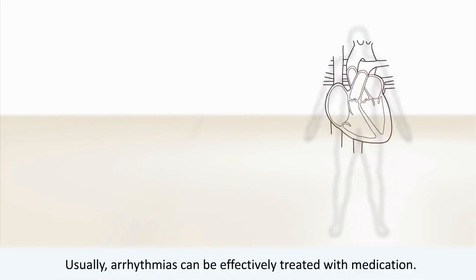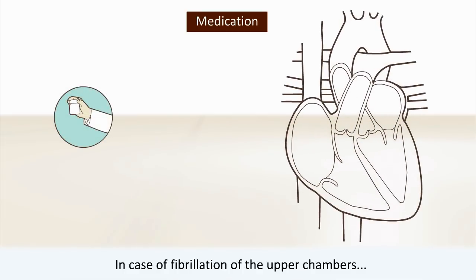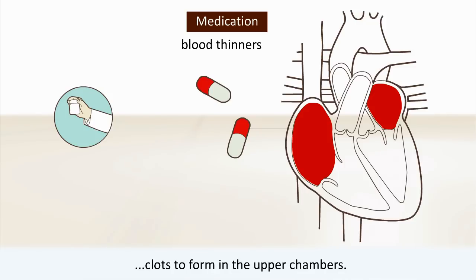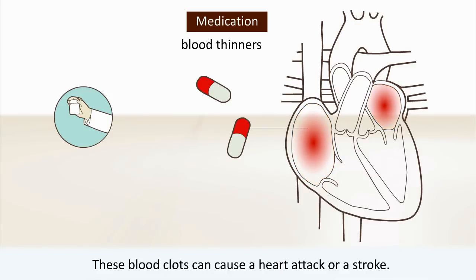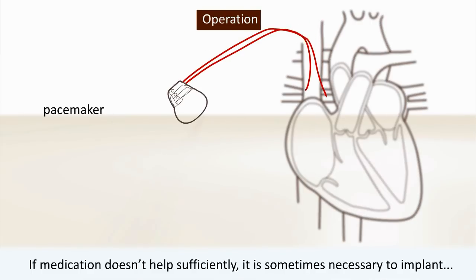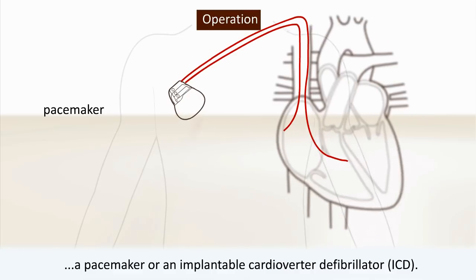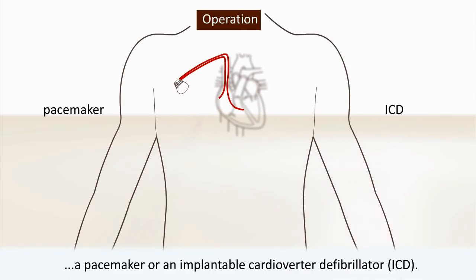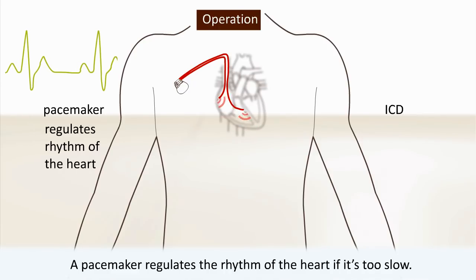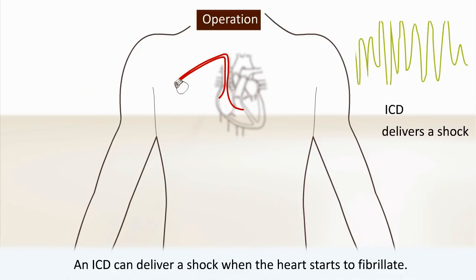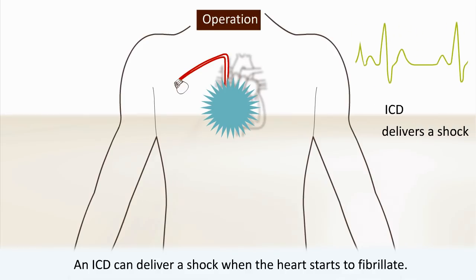Usually arrhythmias can be effectively treated with medication. In case of fibrillation of the upper chambers, blood thinners are often prescribed to prevent blood clots from forming in the upper chambers. These blood clots can cause a heart attack or stroke. If medication doesn't help sufficiently, it is sometimes necessary to implant a pacemaker or an implantable cardioverter defibrillator, ICD. A pacemaker regulates the rhythm of the heart if it's too slow. An ICD can deliver a shock when the heart starts to fibrillate.